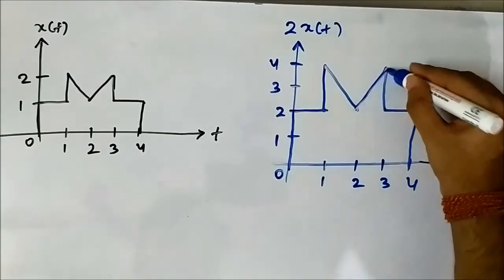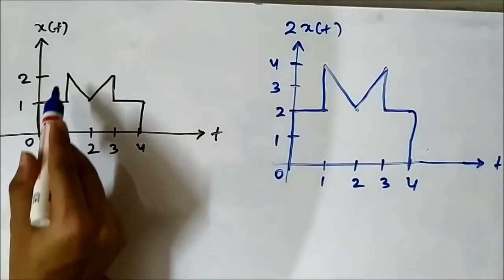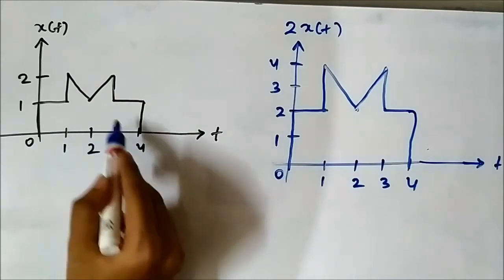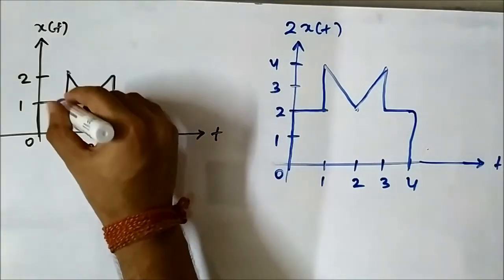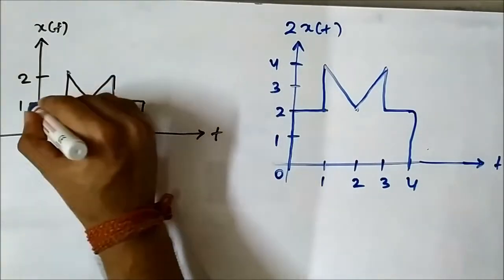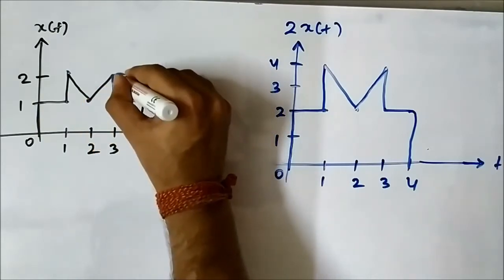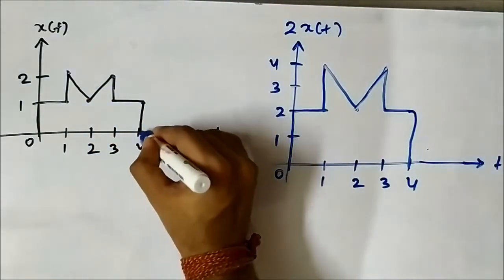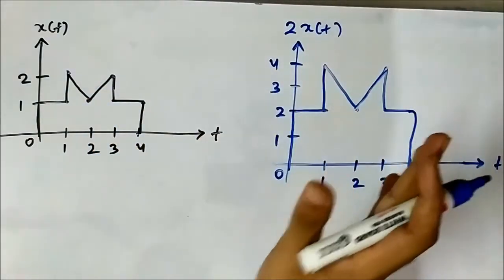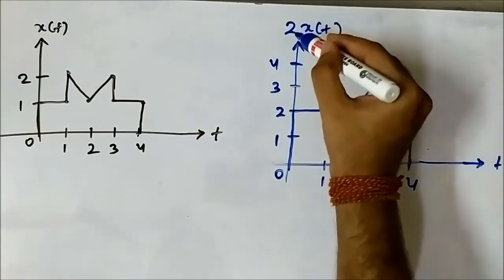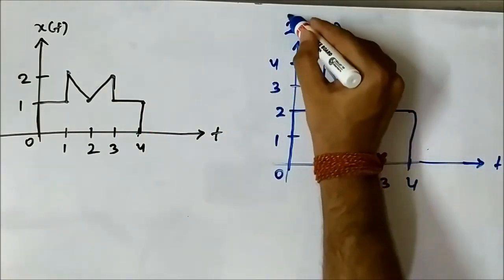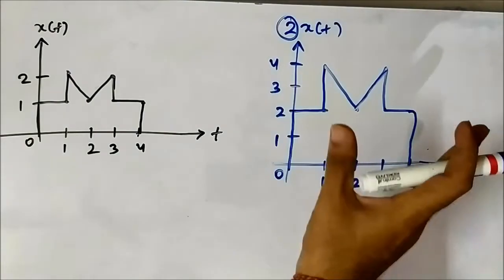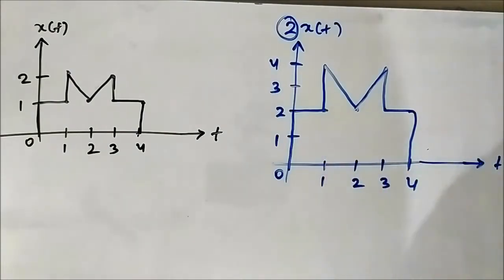You only have to pay attention to the amplitude of the signal at different time instants — identify these key points — and then multiply them with the scaling factor, which here is 2. This gives us the amplified signal.